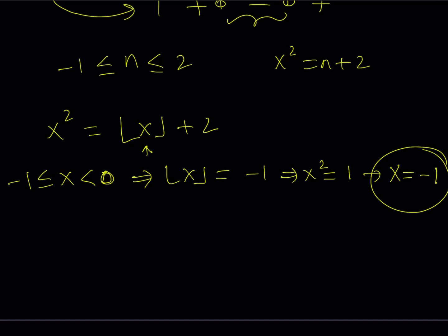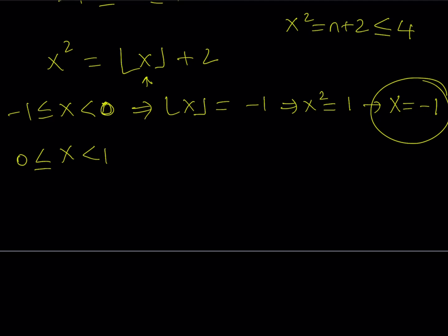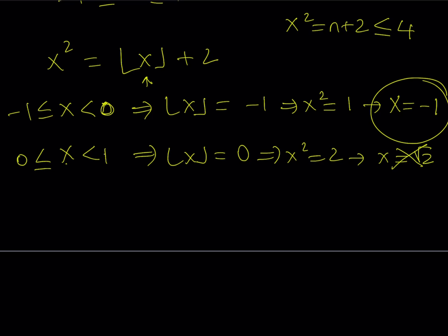Since n values need to be less than or equal to 2, x squared equals n plus 2 means x squared is at most 4, so we won't go beyond 4. If x is between 0 and 1, the floor value of x is 0, so x squared equals 2, meaning x equals plus or minus square root of 2. Neither value falls between 0 and 1, so this solution is not valid and we throw it away.